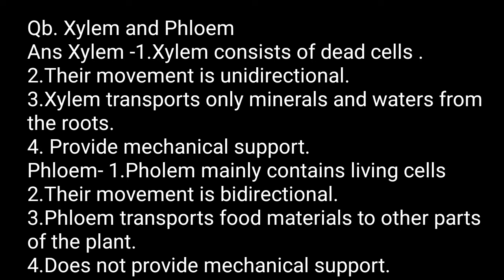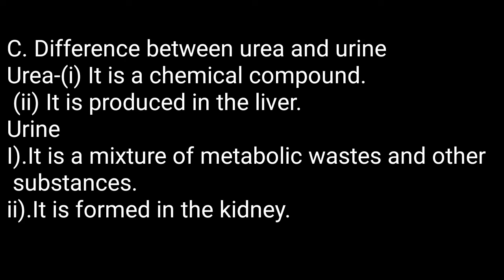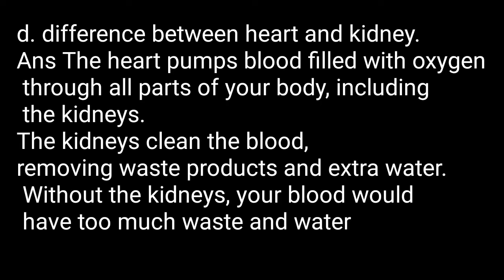Phloem does not provide mechanical support. Now, difference between urea and urine: urea is a chemical compound produced in the liver. Urine is a mixture of metabolic waste and other substances, and urine is formed in the kidney.